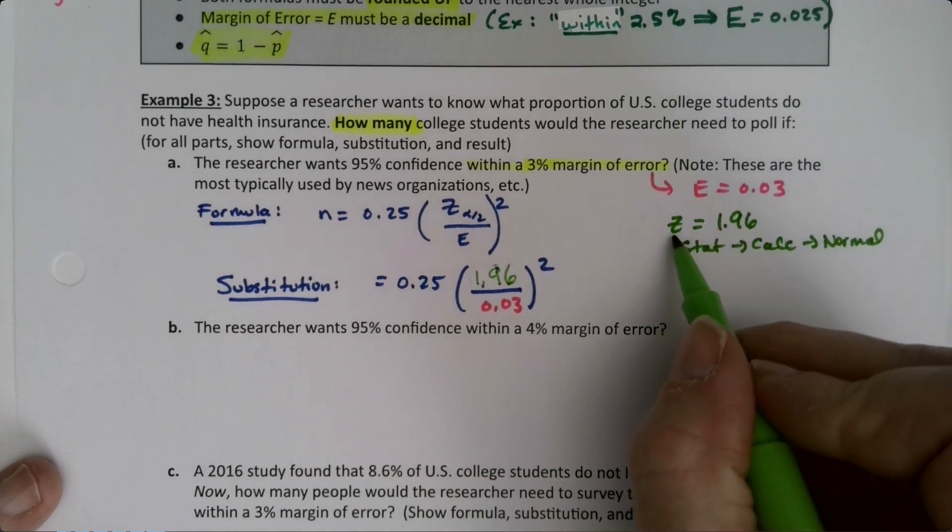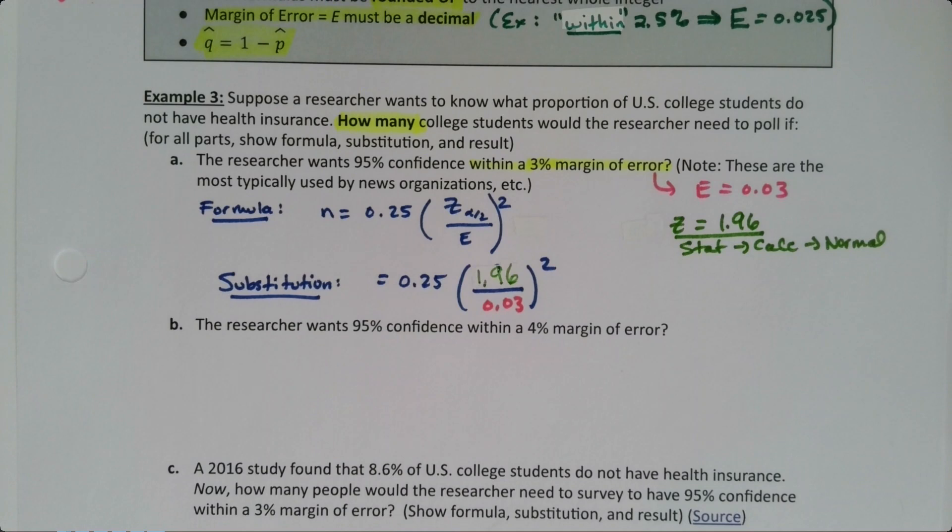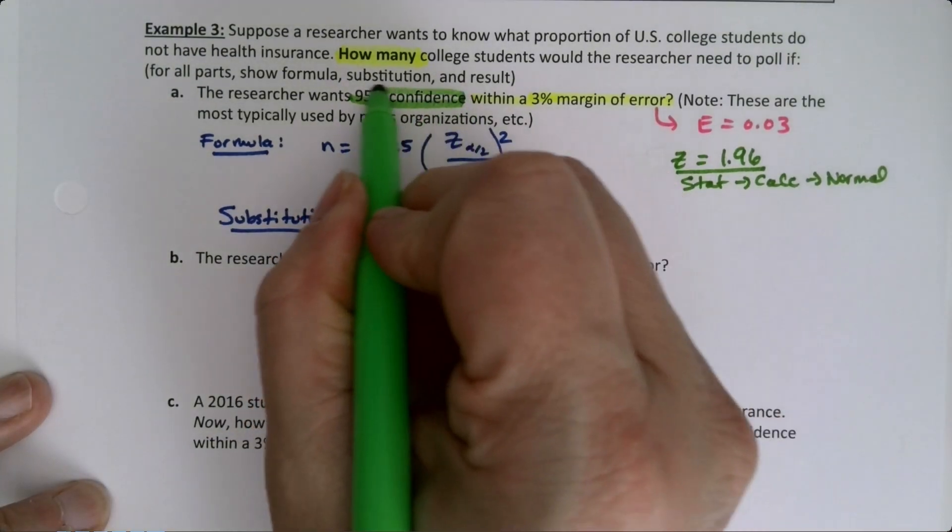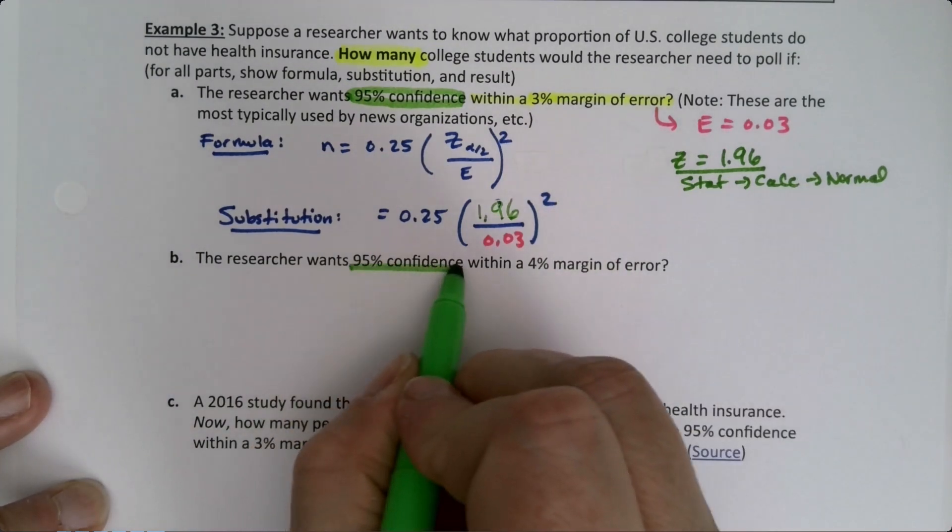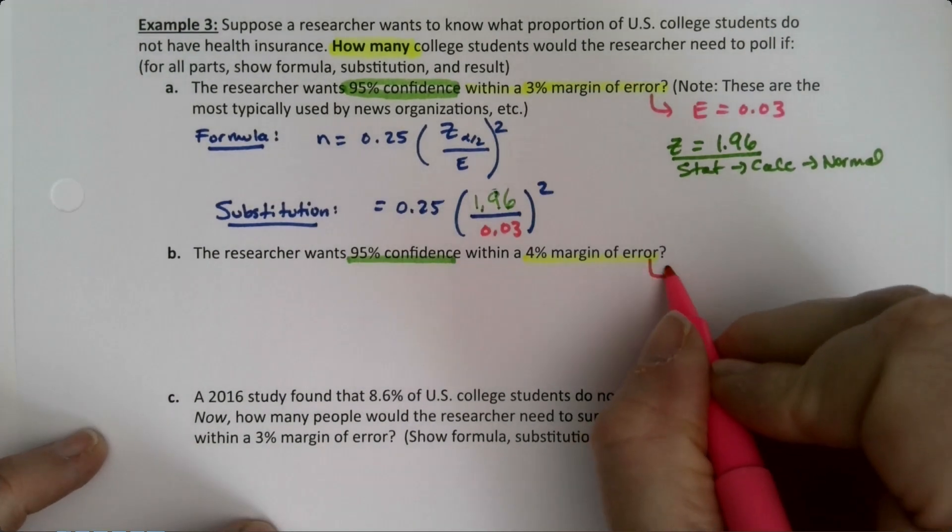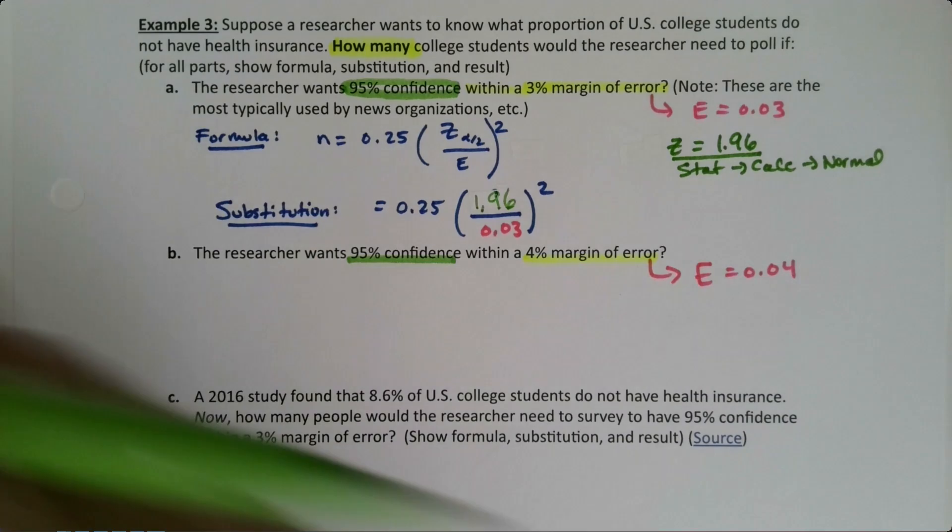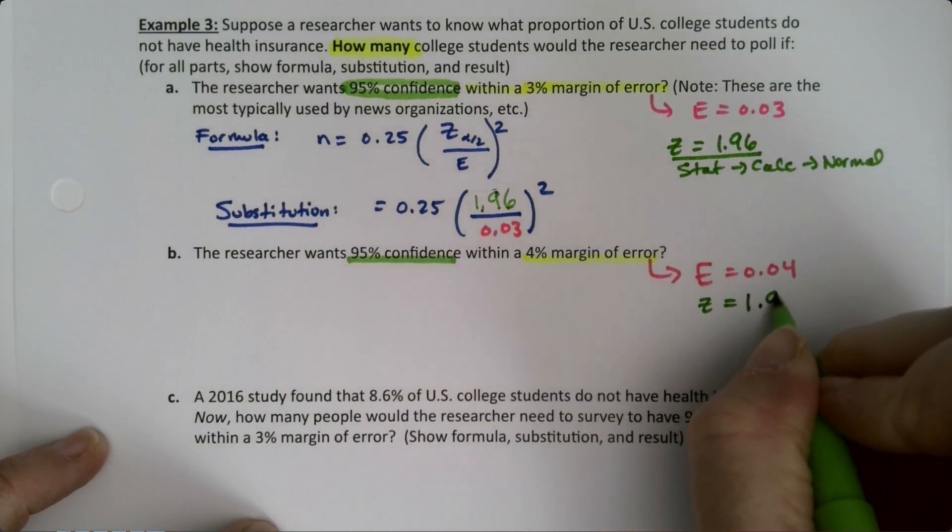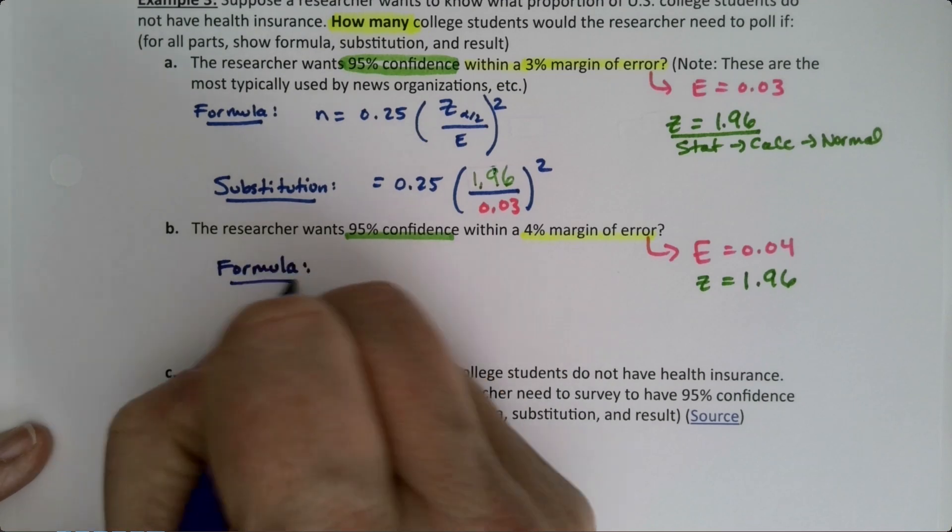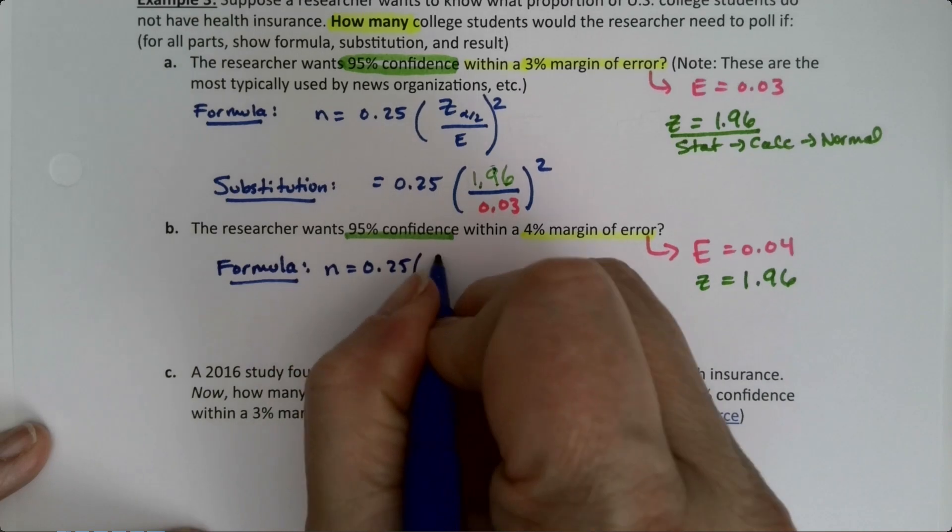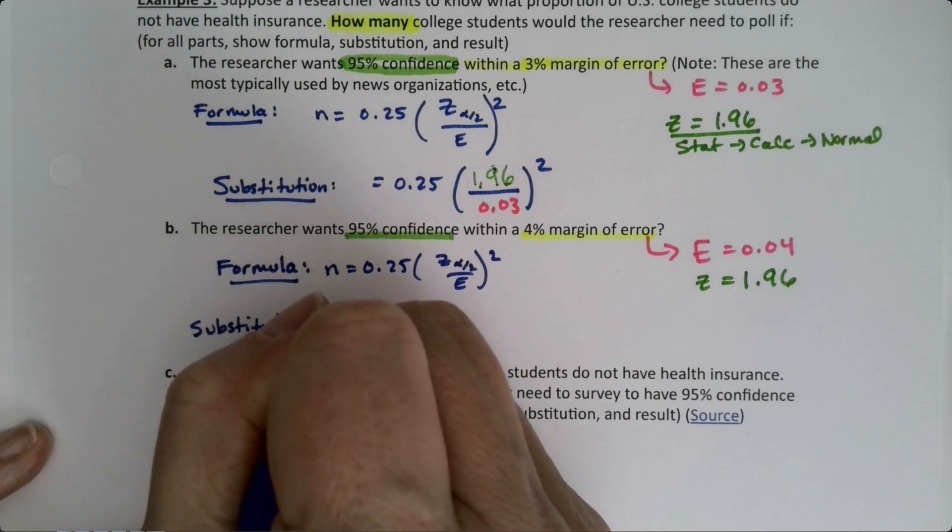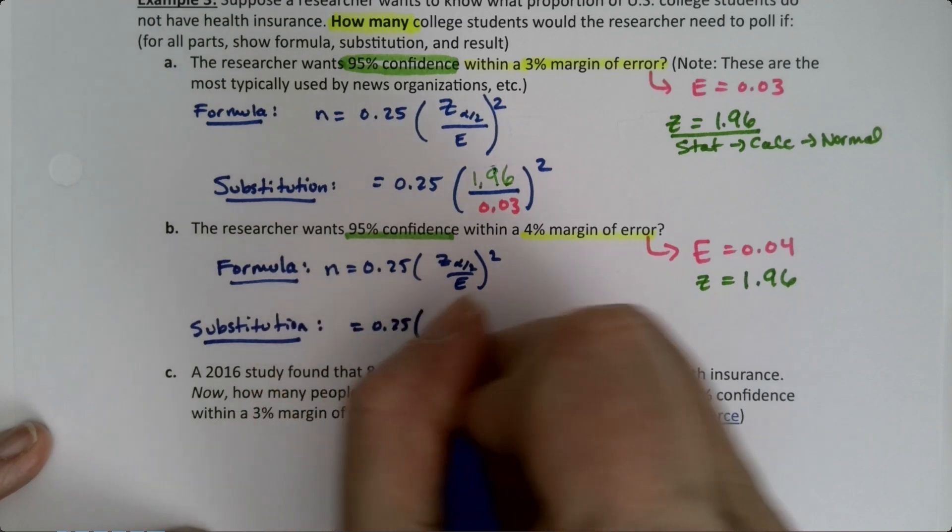Now suppose they want 95% confidence still, but now they want a 4% margin of error. That's going to change my error to 0.04. My z doesn't change because my confidence is still 95%, so that's still 1.96. So n equals 0.25 times z over error squared.